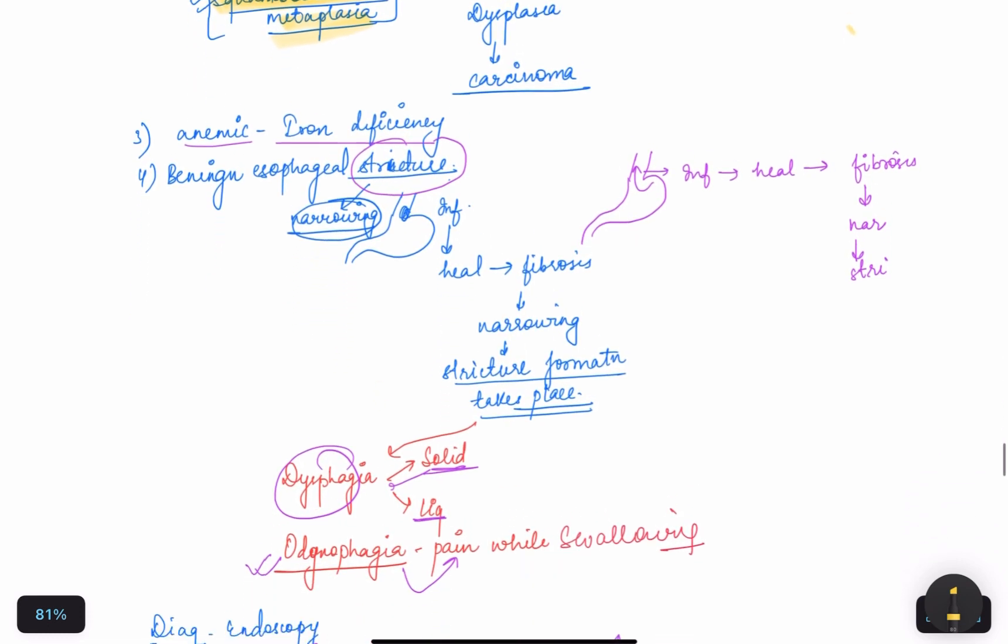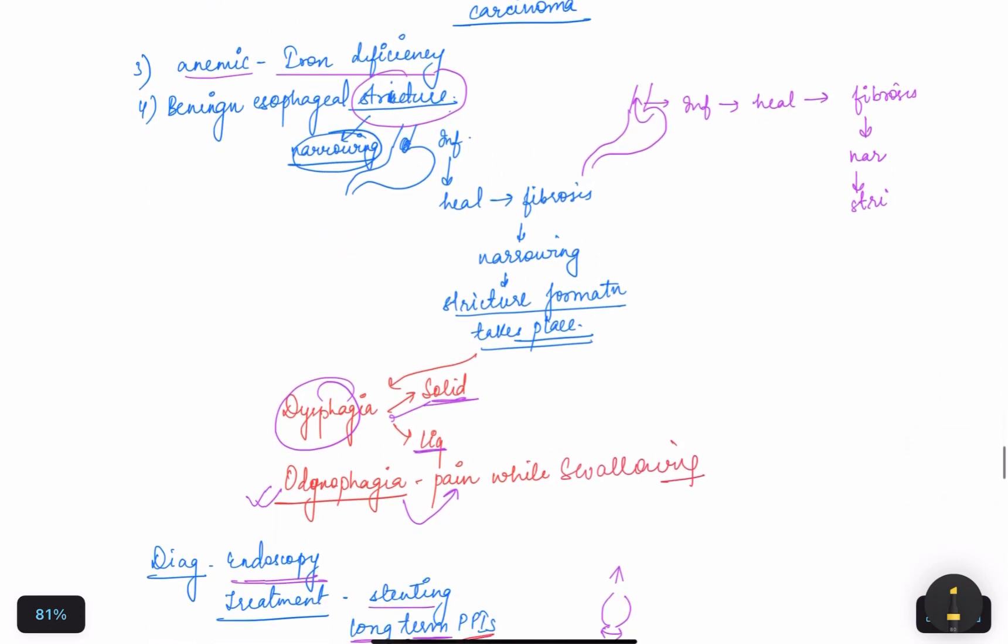Third, we have anemia or iron deficiency. Fourth, we have benign esophageal stricture. Stricture means narrowing. When the reflux of acid takes place in the stomach, inflammation occurs which will lead to healing.